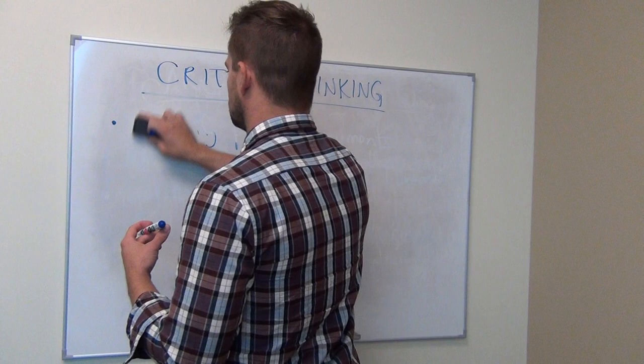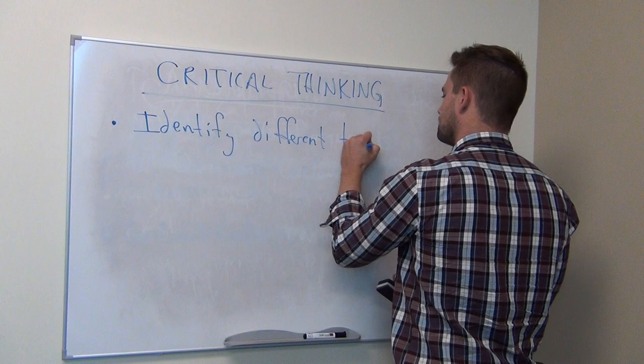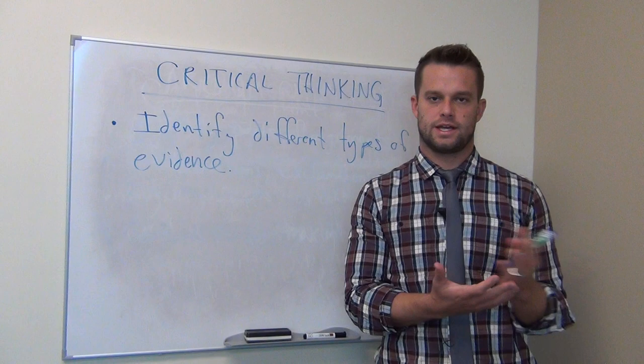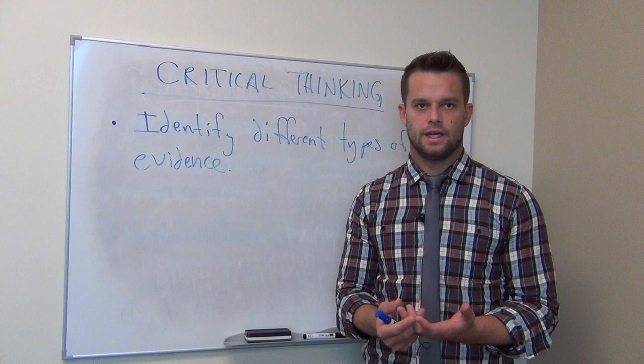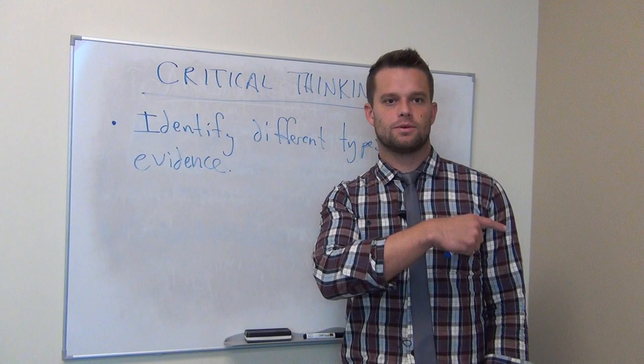Critical thinkers are also able to identify different types of evidence and how that evidence is used to support an argument or to get somebody to believe something about reality. One of the weakest forms of evidence is anecdotal evidence, but you'll often hear people use anecdotal evidence to support their claims. As a justification for their conclusion, they might say something like...